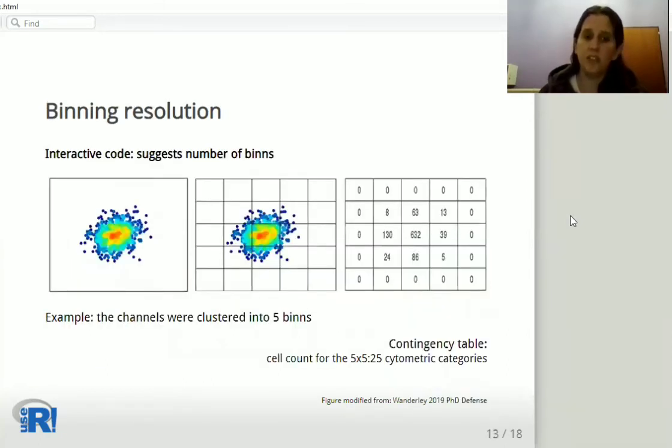FlowDiv uses an interactive code that suggests the best number of bins for channel clustering. In this example, the channels were clustered into five bins, and the contingency table shows the cell count for each cytometric category.